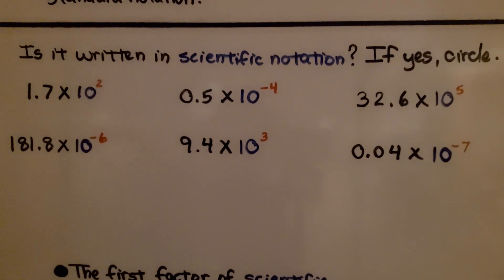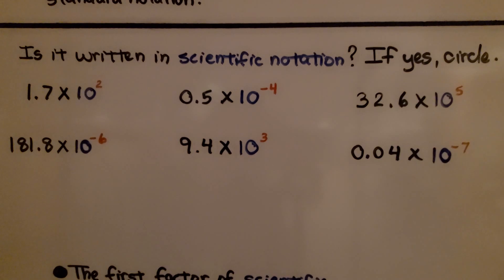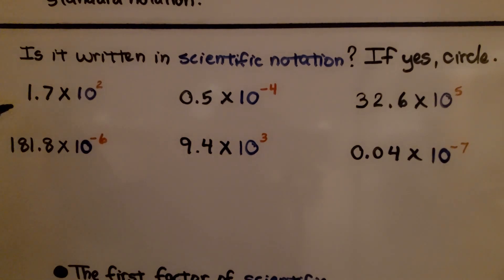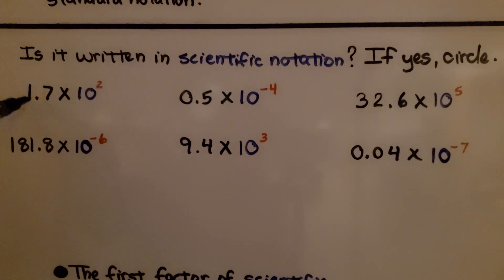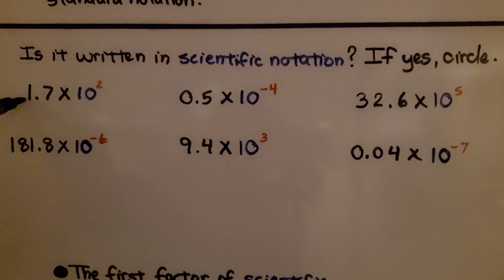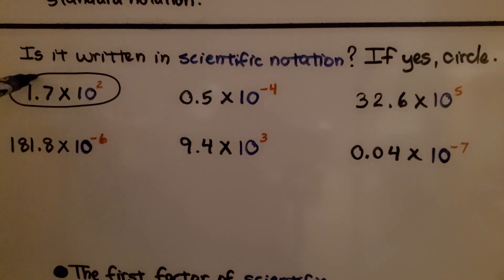Here it's asking if the number is written in scientific notation, and if it is, we need to circle it. The easiest way to tell is to look if there's a digit, a decimal point, and a digit. This one does have that setup, and we know it's greater than or equal to 1 and less than 10 — so this is written in scientific notation.